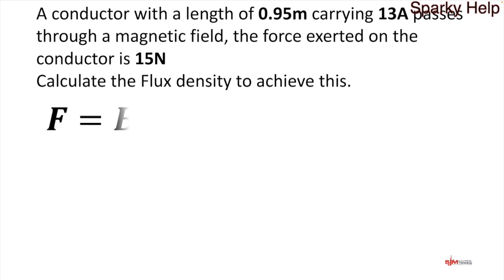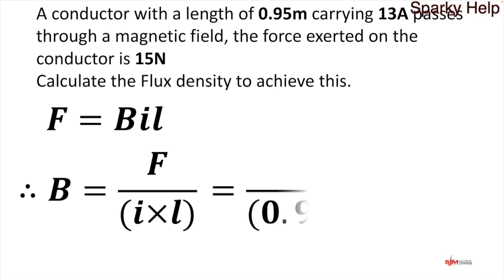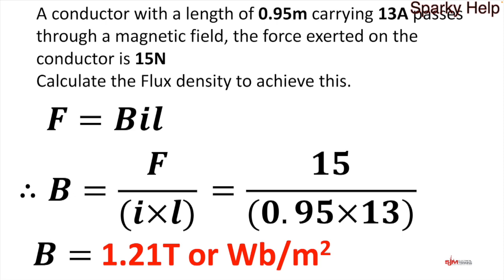Let's have a look at another one. We've got the force, we need the flux density. This is a rearrangement of the formula. We've got our original formula F equals B I L. If we apply the triangle, it becomes B is equal to F divided by I times L. So we've got 15 divided by I which is 13 times by L which is 0.95. It doesn't matter what order you put it in. When you work that out, it becomes 1.21 tesla or webers per meter squared. Either is acceptable, but be aware that they are the same. The triangle would have been helpful if you can't remember.